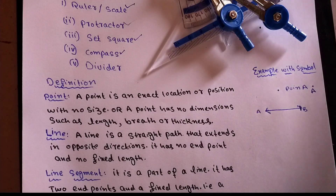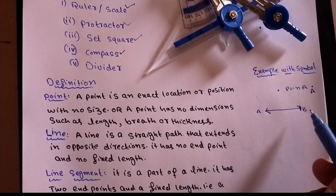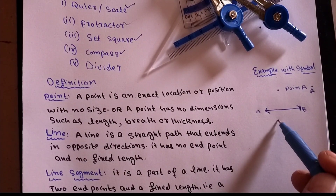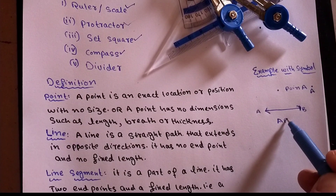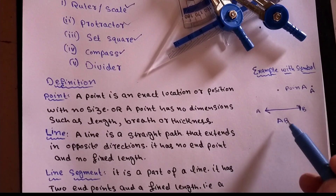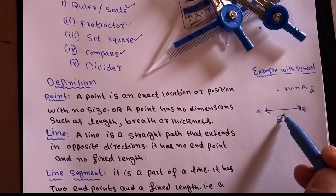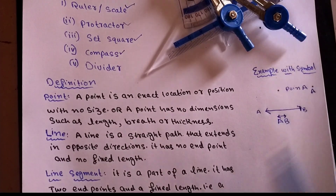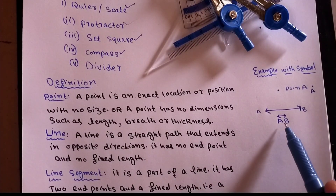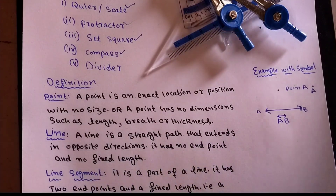Now to show a line, we draw line AB. We write it as AB with a special symbol on top - a double-headed arrow notation - which means it is a line going infinitely in both directions. That is how we represent line AB.